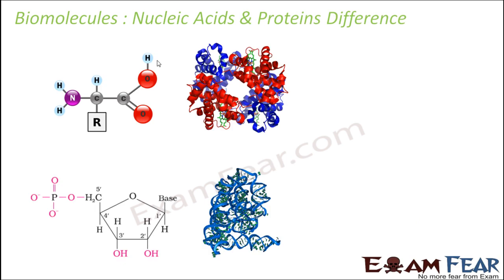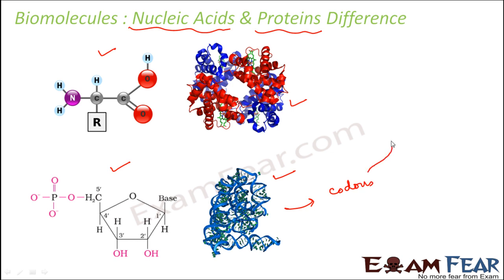Since nucleic acids and proteins are very closely related to each other, let us understand how they are related and what is the difference. Structure-wise they are quite different — proteins are made up of amino acids while nucleic acids are made up of nucleotides. But in terms of their close relation: nucleic acids contain genetic information in the form of the sequence of nitrogenous bases. These sequences form codons, and each codon gives information about a particular feature. They are carried by RNA to the ribosome where each codon gets transformed into an amino acid, and these amino acids form proteins.